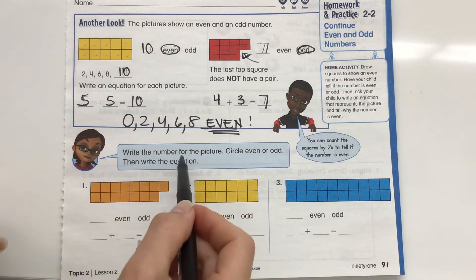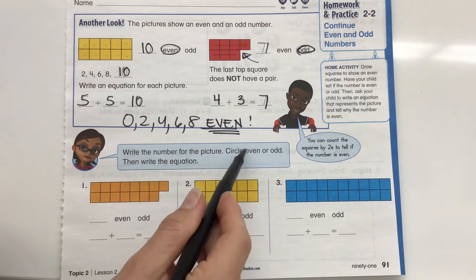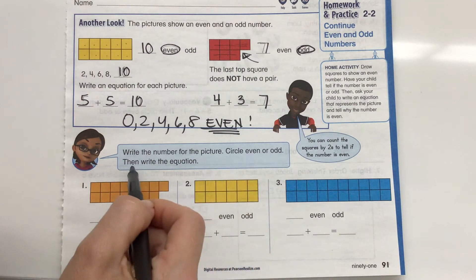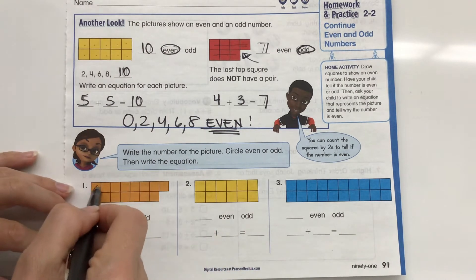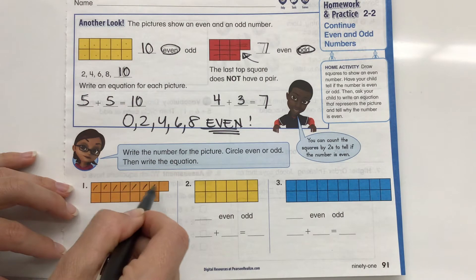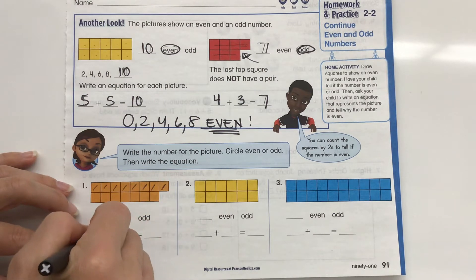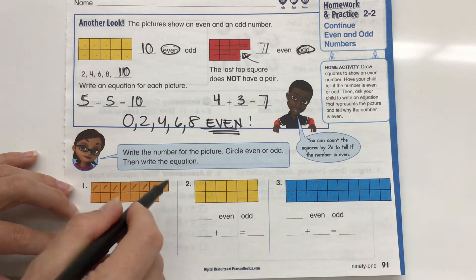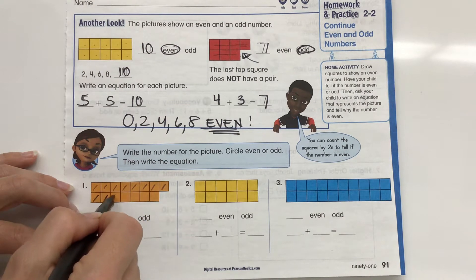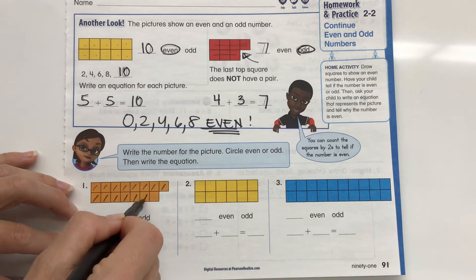All right. Let's take a look at these. Write the number for the picture, circle even or odd, then write the equation. So let's take a look. 1, 2, 3, 4, 5, 6, 7, 8 on the top row. Now I can tell one's missing there so it's definitely going to be odd. But let's see how many we have on the next row: 1, 2, 3, 4, 5, 6, 7.